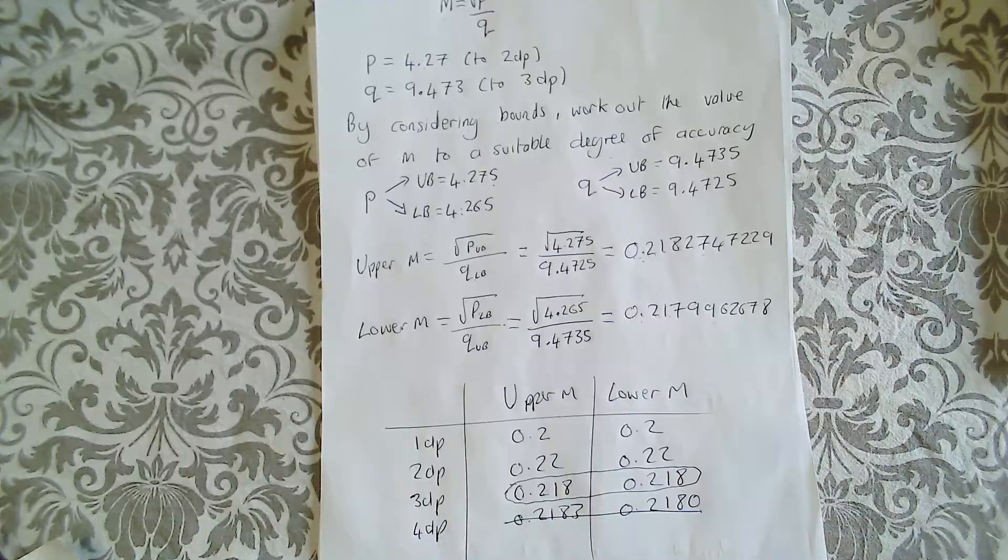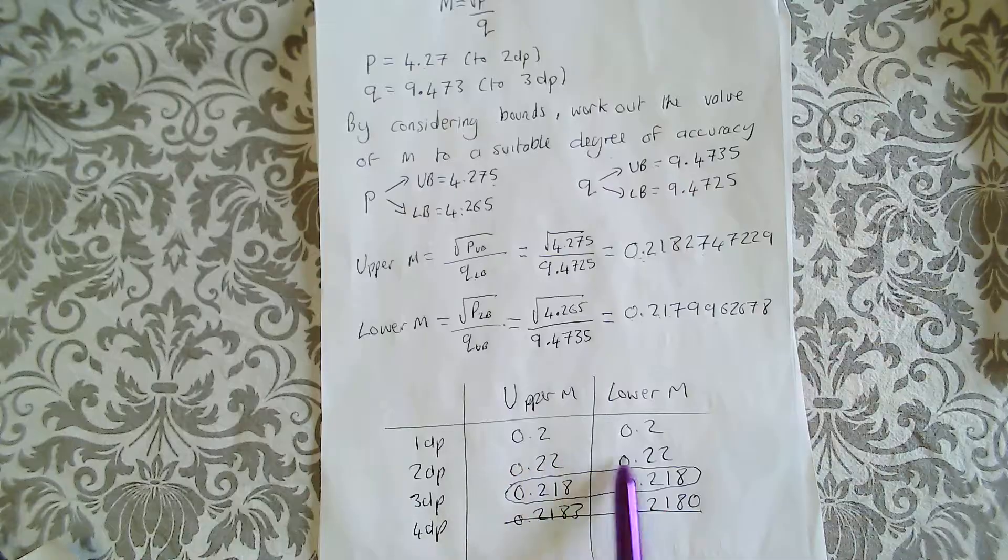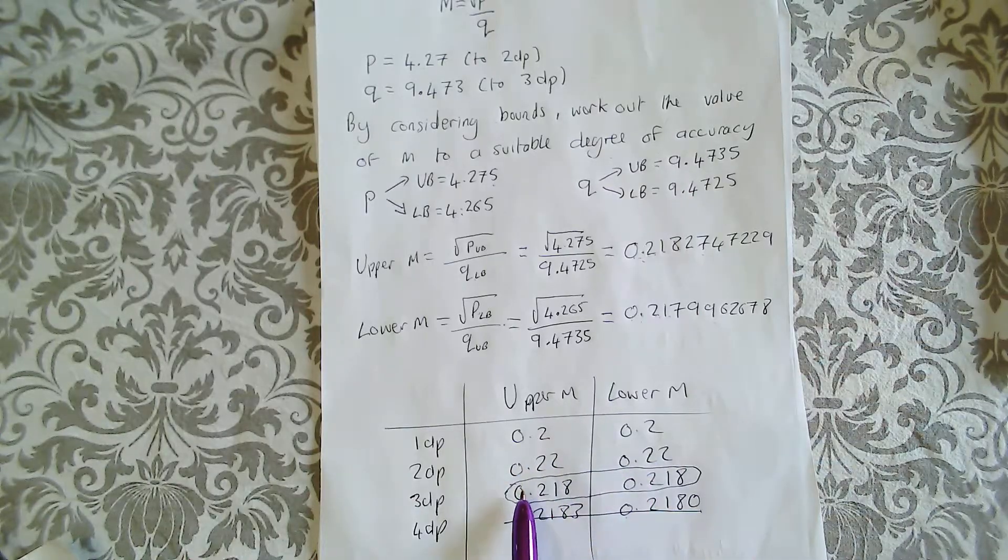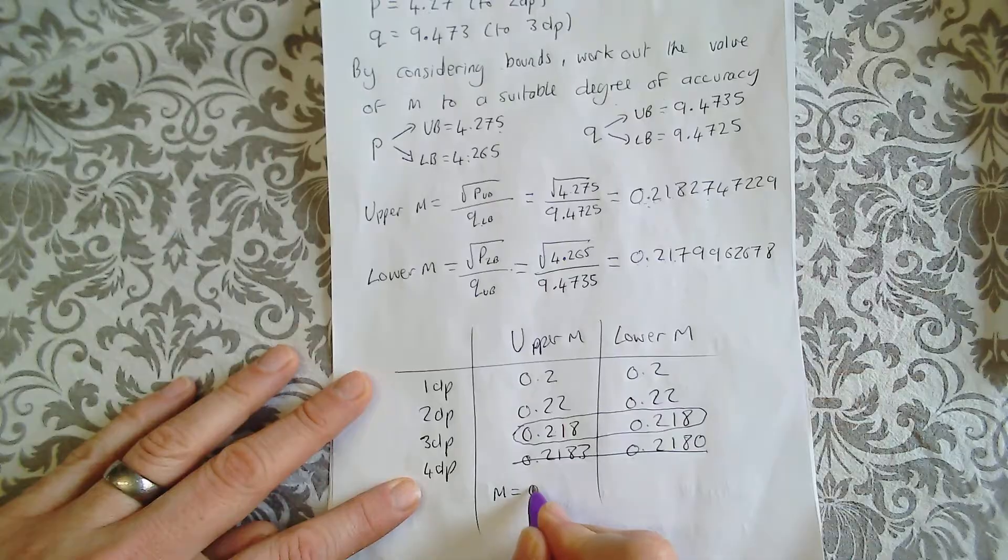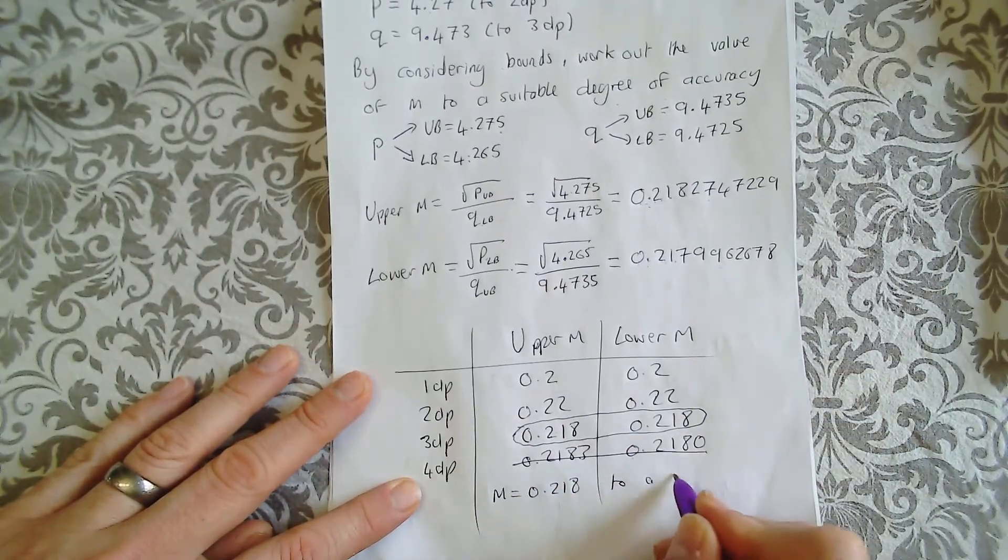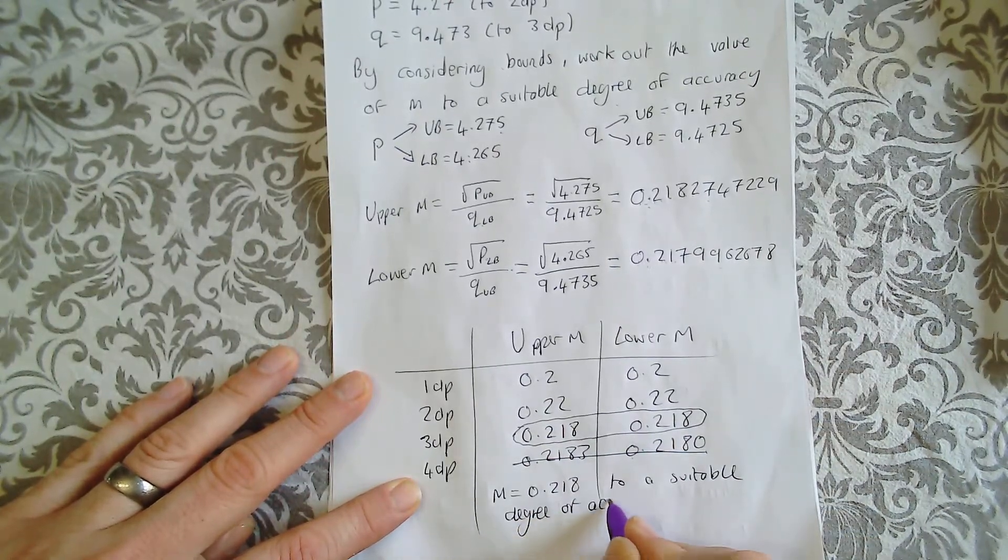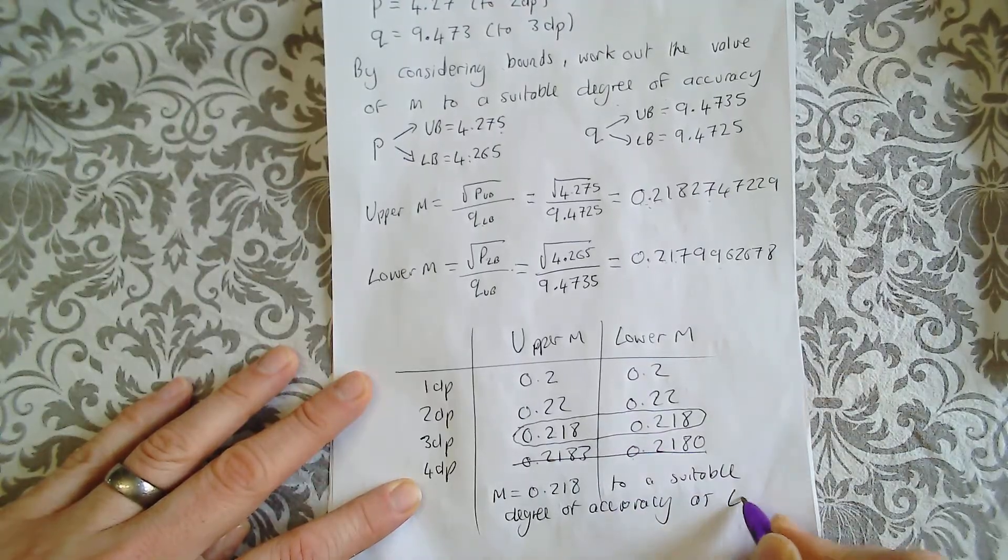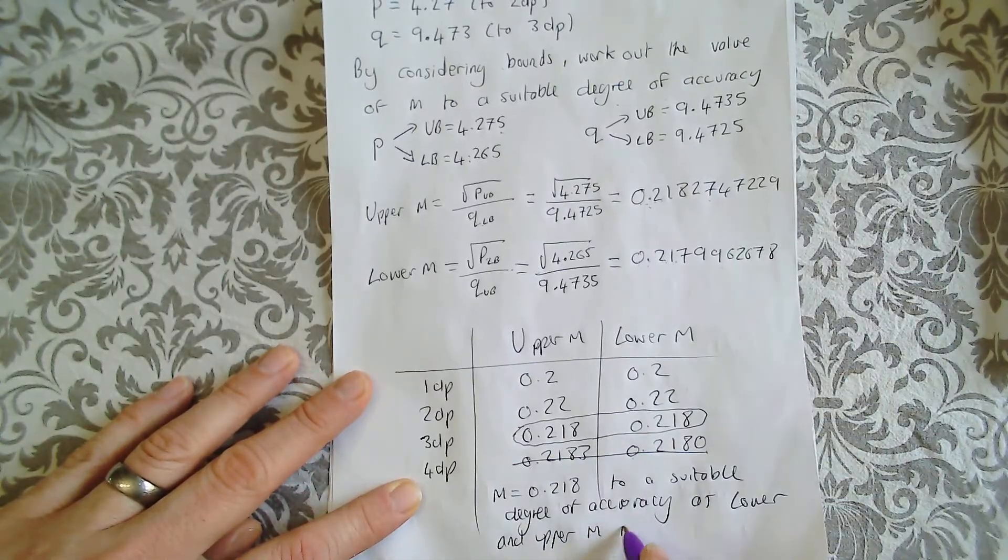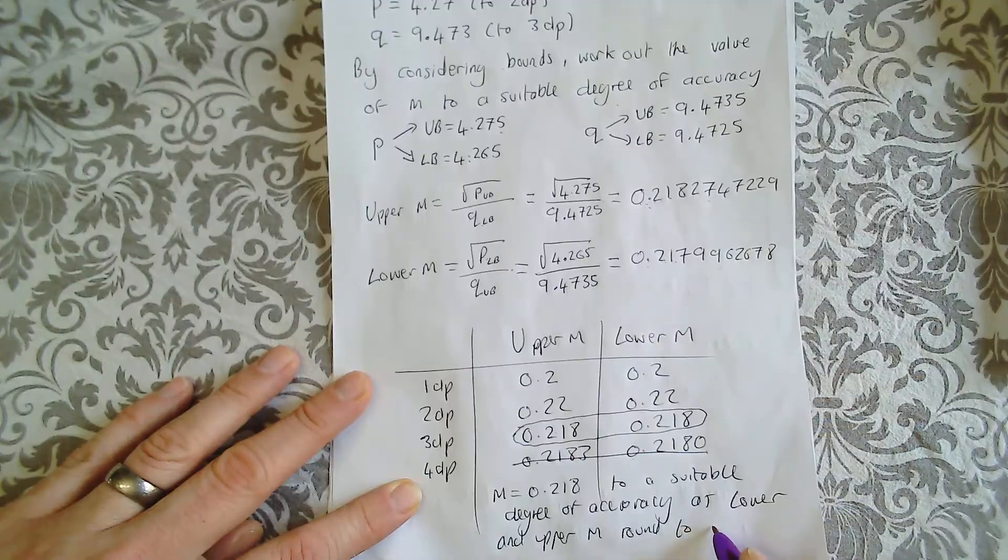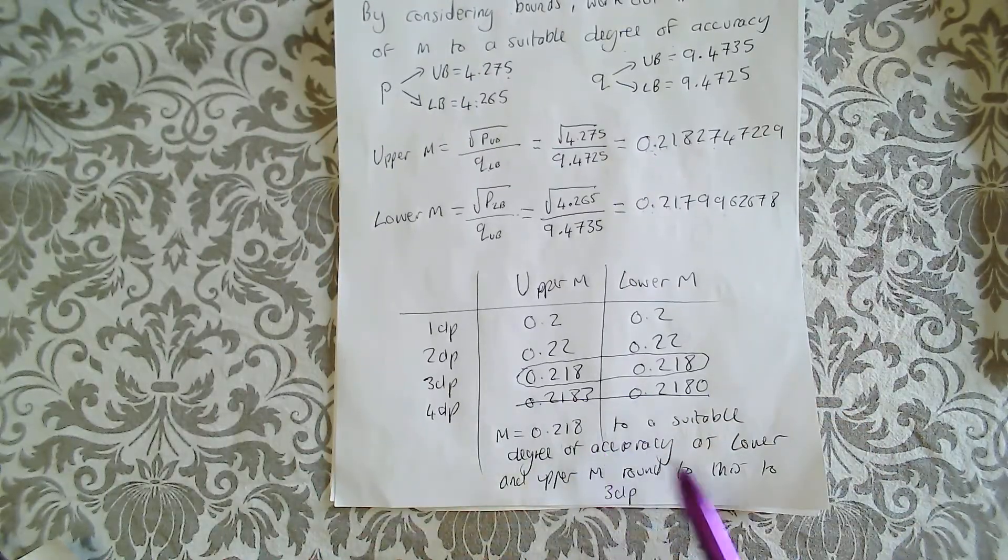And that is what our suitable degree of accuracy is. We could have one decimal place, but we can go even further. We could have two decimal places, but we could go even further. But three decimal places is the best. So we use M equals 0.218 to a suitable degree of accuracy as lower and upper M round to this, to three decimal places. Some kind of explanation at the end to get the marks.